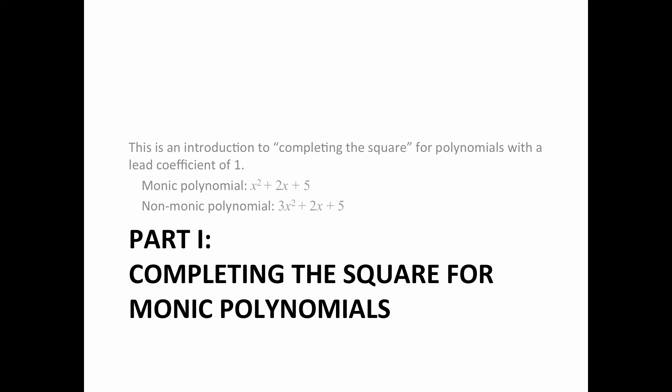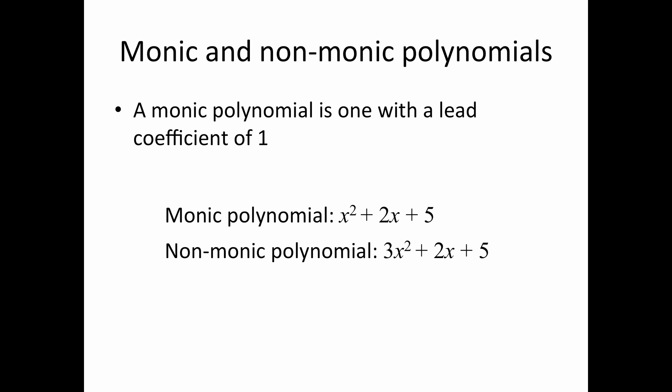We'll start by looking at monic polynomials, that is, polynomials with a lead coefficient of one. A monic polynomial is something like x² + 2x + 5, where the coefficient of x² is one. A non-monic polynomial is different - the coefficient of x² is something other than one. In this example, it's three. We'll look at the second example later.